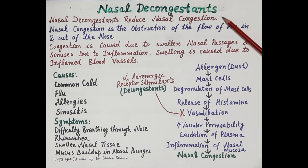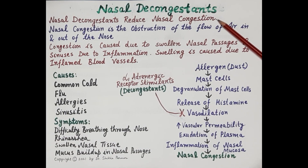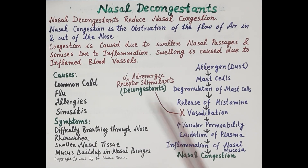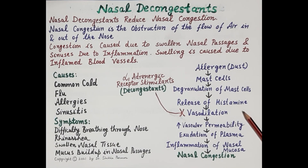Nasal decongestants reduce nasal congestion by stimulating alpha-1 adrenergic receptors. They are sympathomimetics and produce vasoconstriction — that is, constriction of smaller arteries and arterioles in the nose, nasal mucosa, throat, and paranasal sinuses.